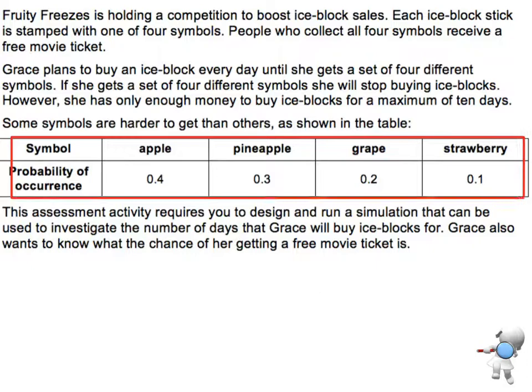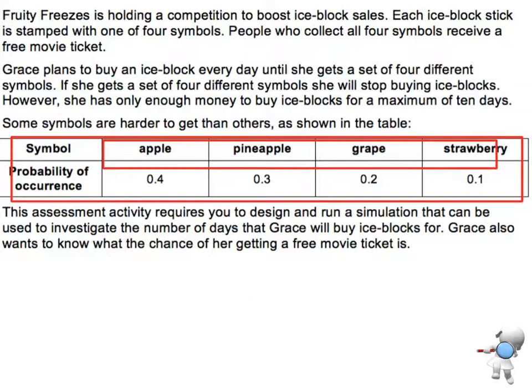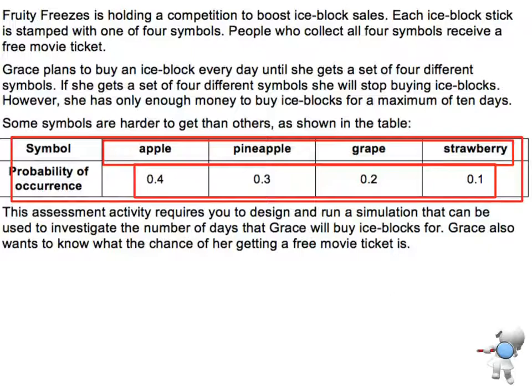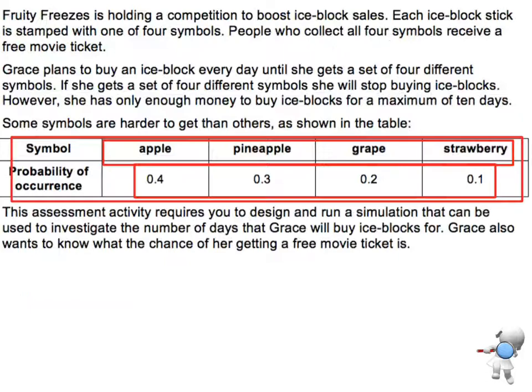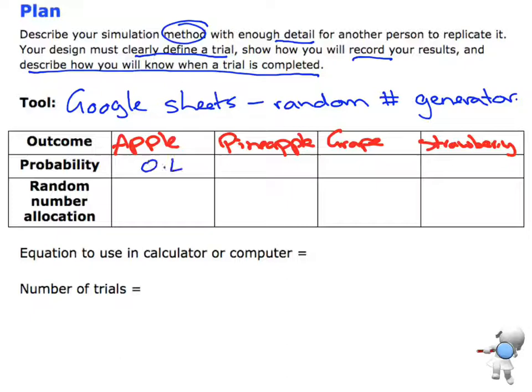Now I need to look at what my different outcomes are, so I'll refer back to the previous page. I've got my four outcomes shown in that table: apple, pineapple, grape, and strawberry. The four probabilities that go with those are 0.4, 0.3, 0.2, and 0.1.